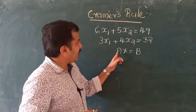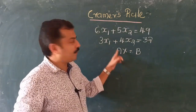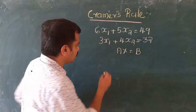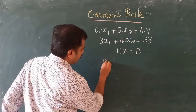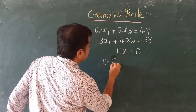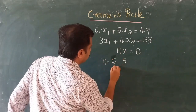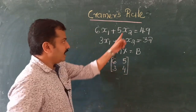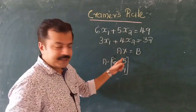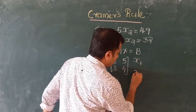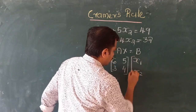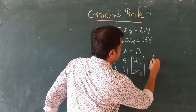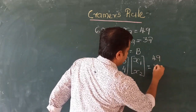Here, A is the matrix of coefficients — the coefficients are 6, 5, 3, 4 — so A equals the 2 by 2 matrix with entries 6, 5, 3, 4. The vector x contains the unknowns x1 and x2, and b is the vector of constants which are 49 and 32.